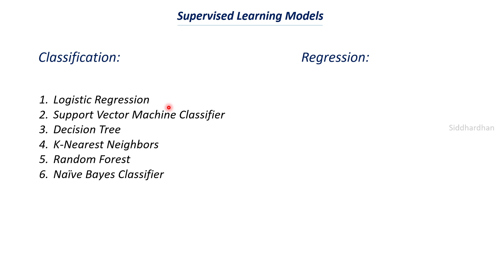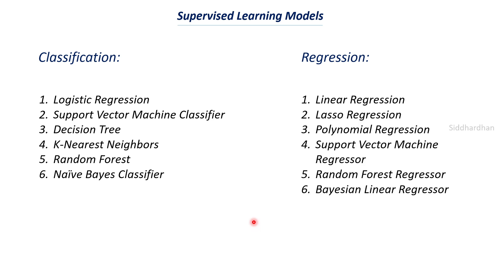For regression, the main models include linear regression, lasso regression, and polynomial regression. Linear regression fits a straight line, while polynomial regression can fit a curve. Support vector machines and random forest can be used for both classification and regression — only some code-level differences exist in how they approach the dataset. Note that logistic regression is named as a regression model but is actually used for classification in most cases.